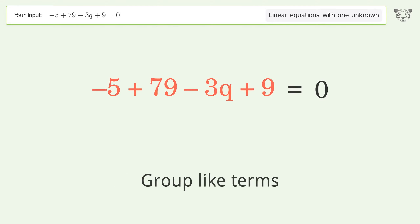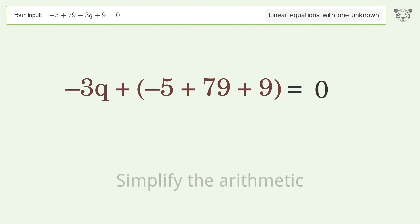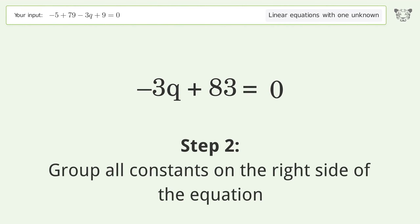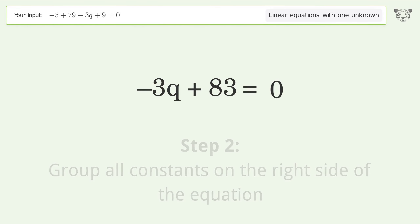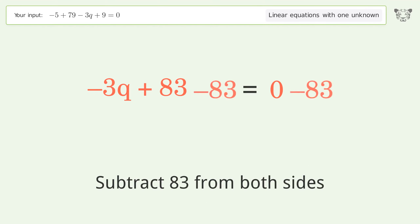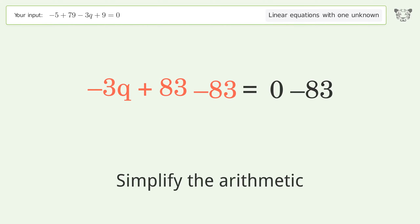Group like terms. Simplify the arithmetic. Group all constants on the right side of the equation — subtract 83 from both sides. Simplify the arithmetic.